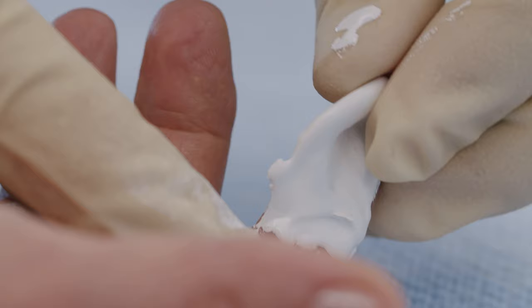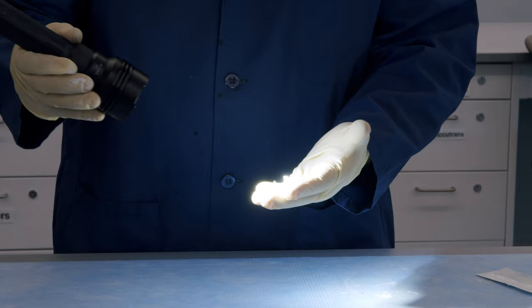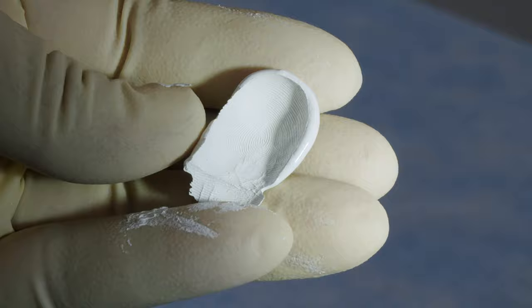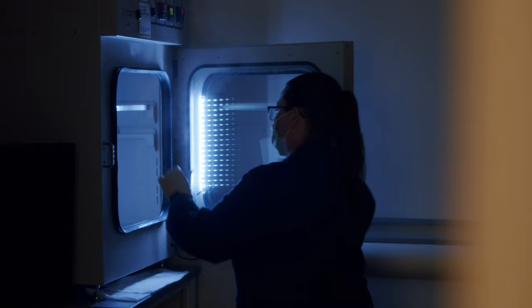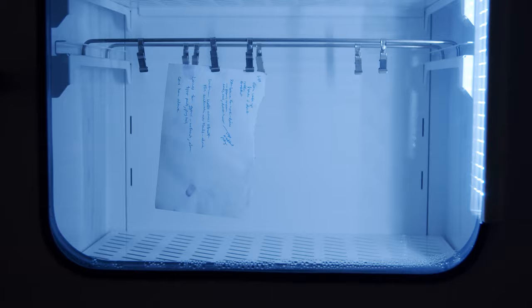On our fingers, we have three basic patterns. We have a loop, a whorl, and an arch. So the arrangement of those features and their location is unique to every person. So when we're looking at fingerprints, we're looking at that detail. You need some type of lighting, special lighting, or you need some type of powder to make it visible, or some type of chemical process to make it visible to the eye. And that is what we call a latent print.